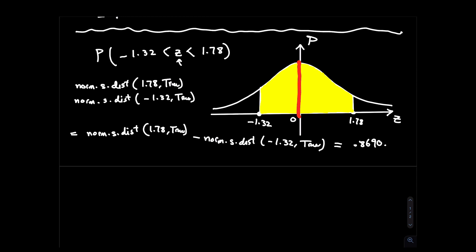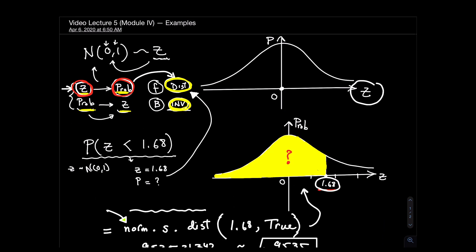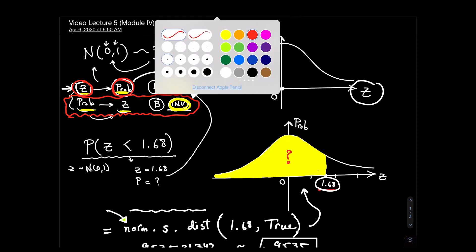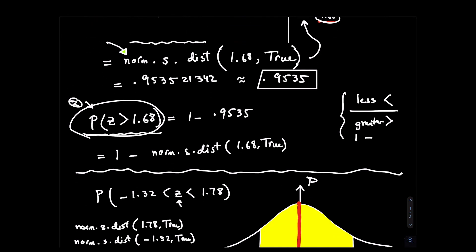Now we start with the backwards examples for the standard normal distribution. We're still dealing with N(0,1), but instead of giving you z-values, I'm going to give you probabilities and ask you to find the z-value. That's the inverse problem — in Excel, we'll be using the inverse command, norm.s.inv.